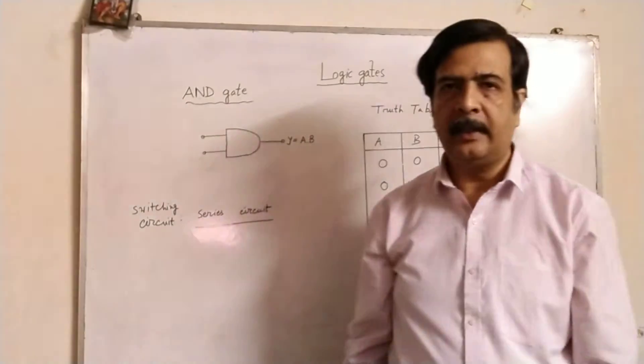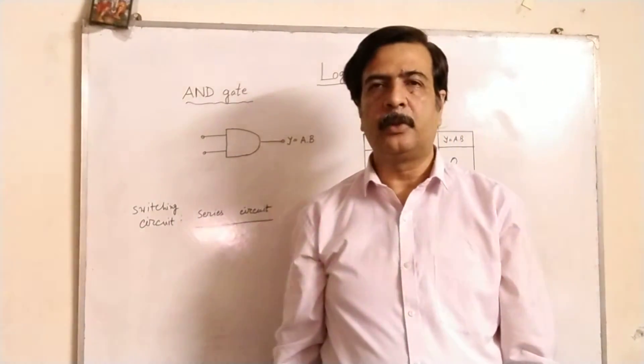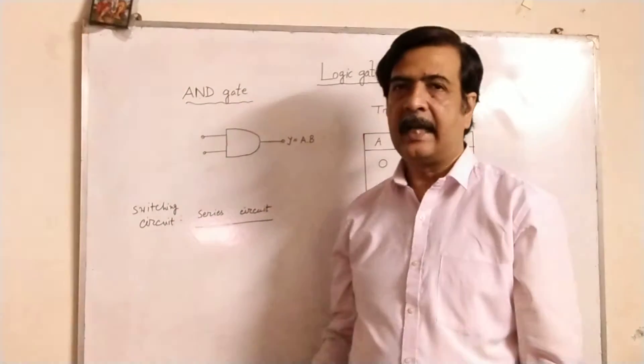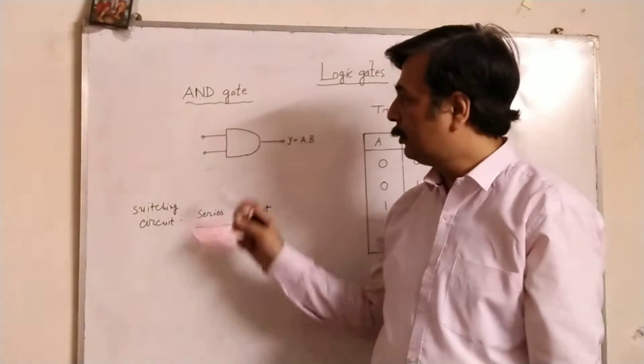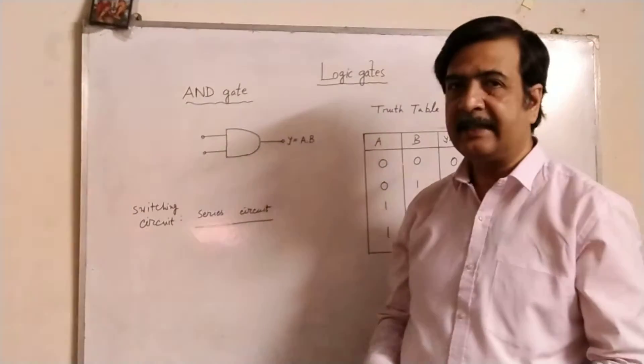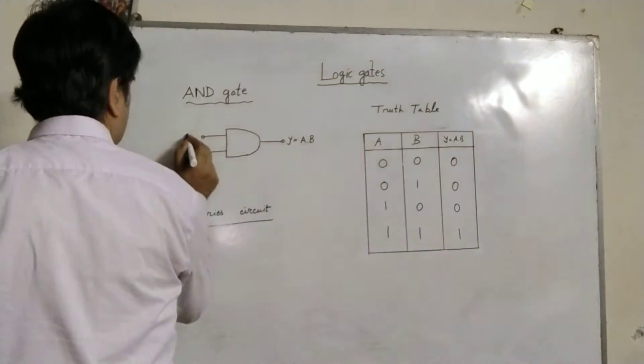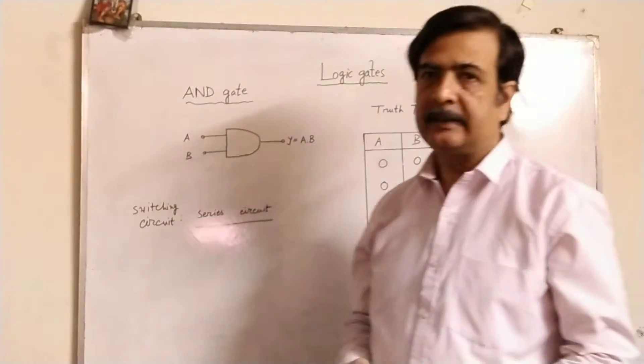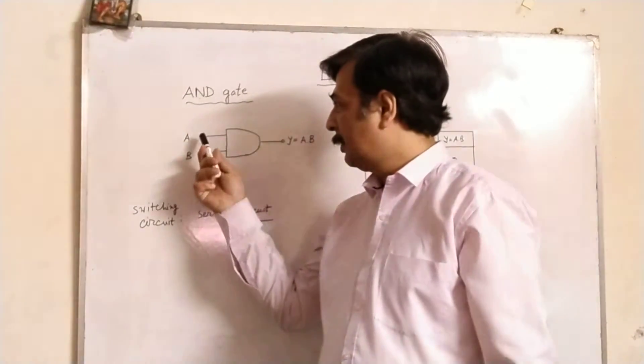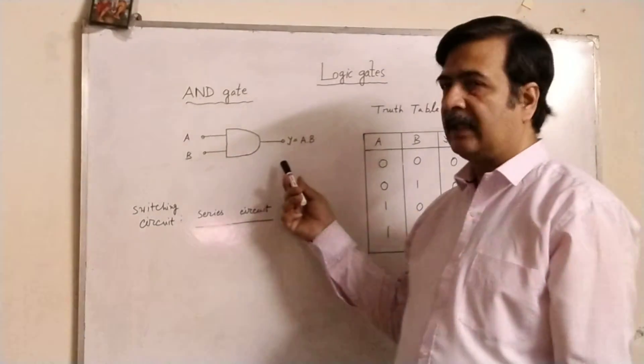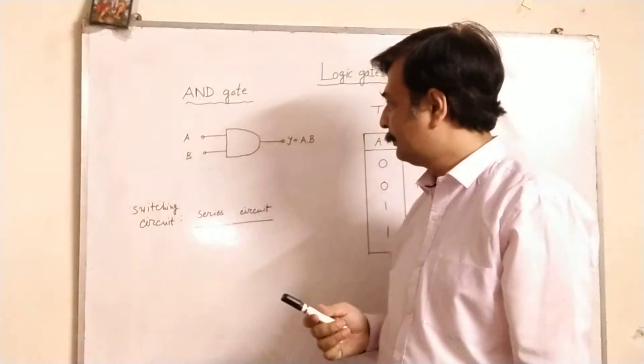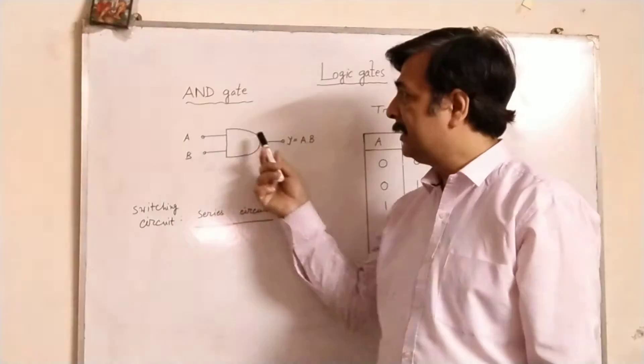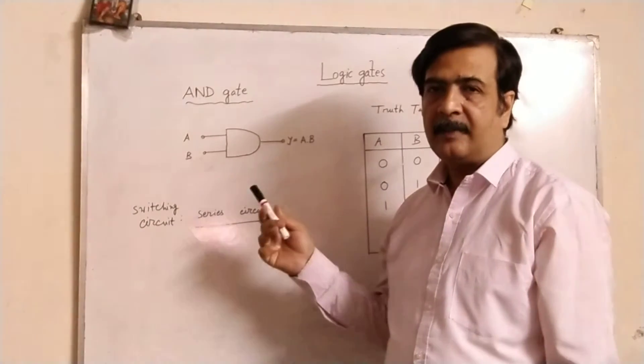Hello students, today we will discuss logic gates. Here the topic is AND gate. So the circuit symbol of AND gate is like this. A and B are the two inputs, and Y is the output.